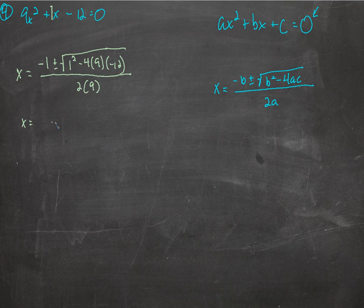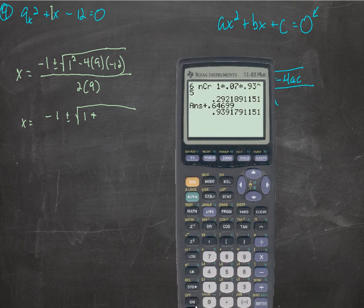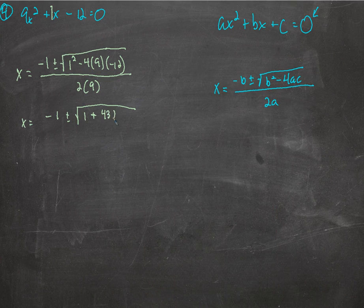So that's x equals negative 1 plus or minus the square root of — okay, this is 1 minus... let's say plus, because we're going to have a negative times a negative, that's going to be positive. So 4 times 9 times 12 — that's not really something I'm going to try and do in my head. 12 times 4 times 9 is 432, all over 18.